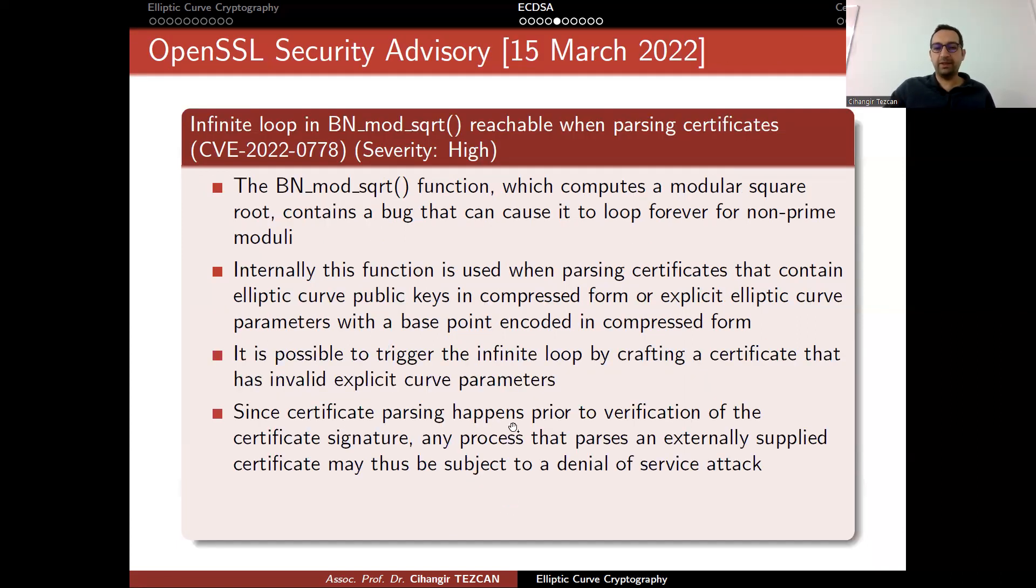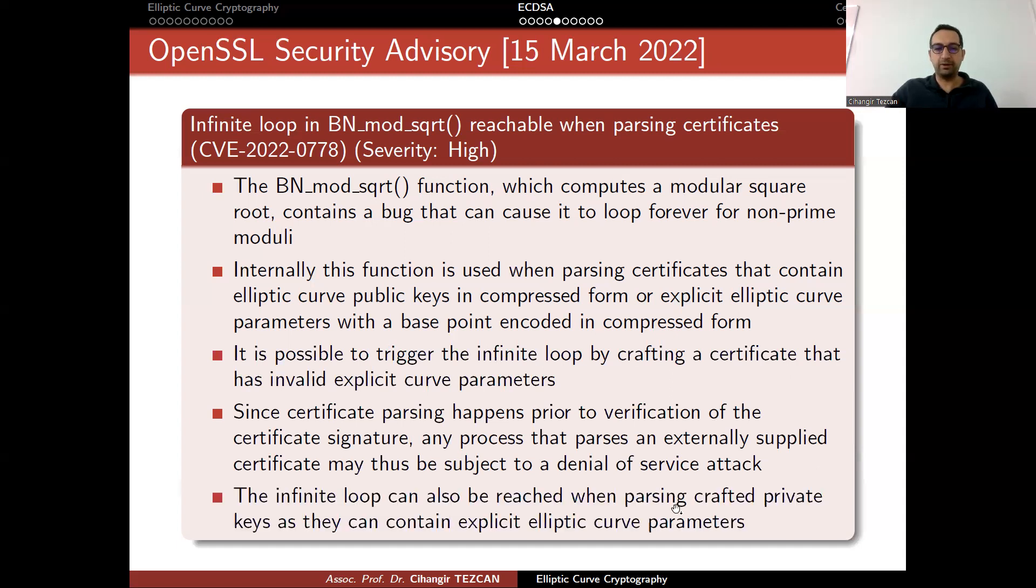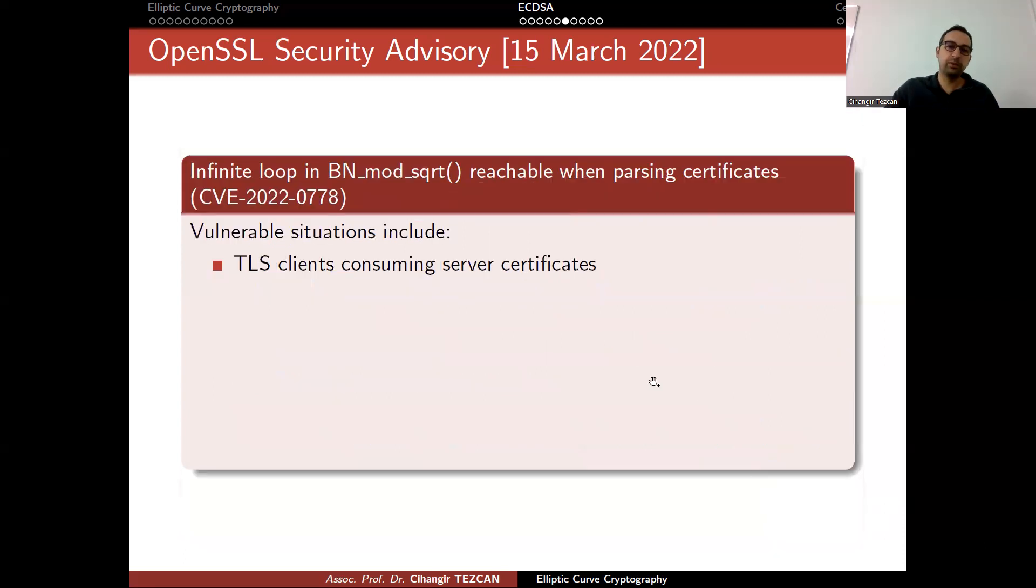Since certificate parsing happens prior to verification of the certificate signature, any process that parses an externally supplied certificate may thus be subject to a denial of service attack. Because since you are going to an infinite loop, your CPU cycles will be busy, so you actually create a denial of service attack. The infinite loop can also be reached when parsing crafted private keys as they can contain explicit elliptic curve parameters.